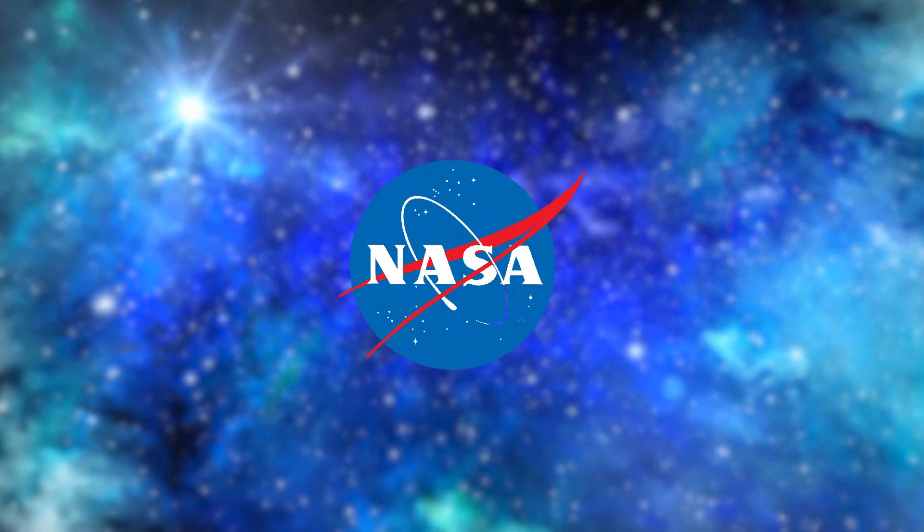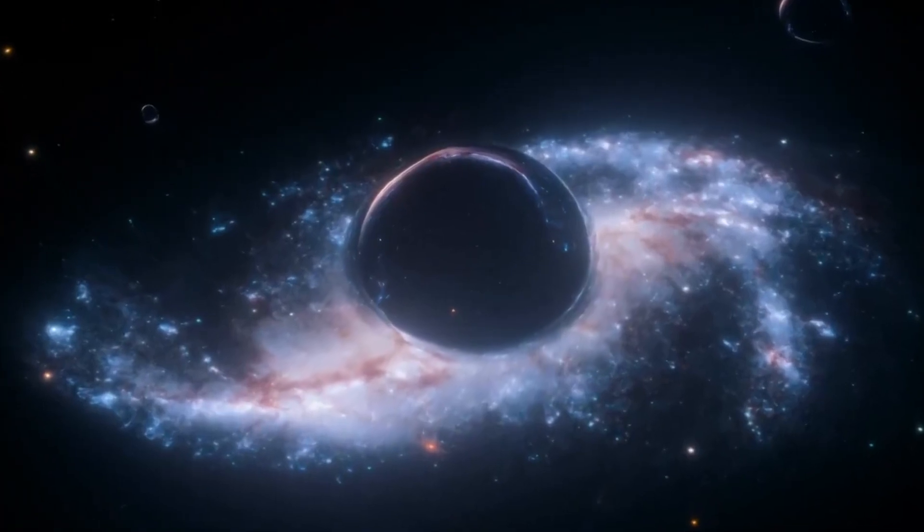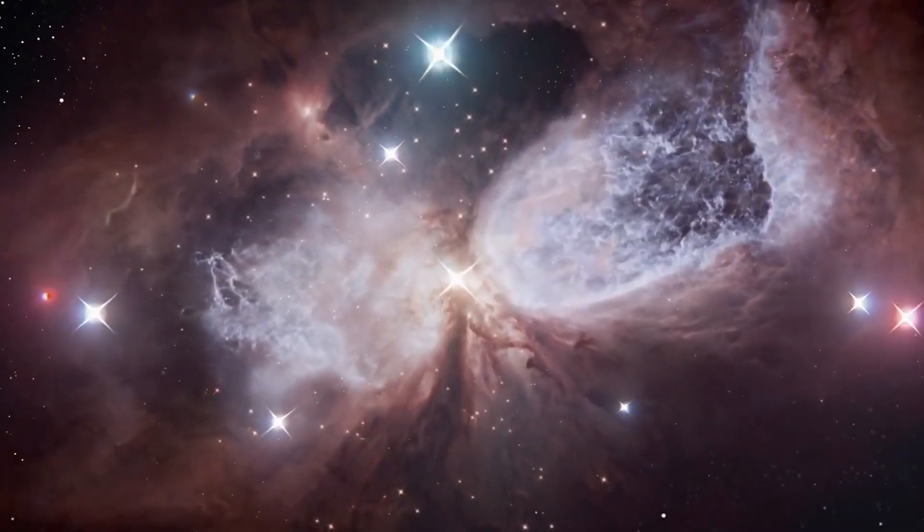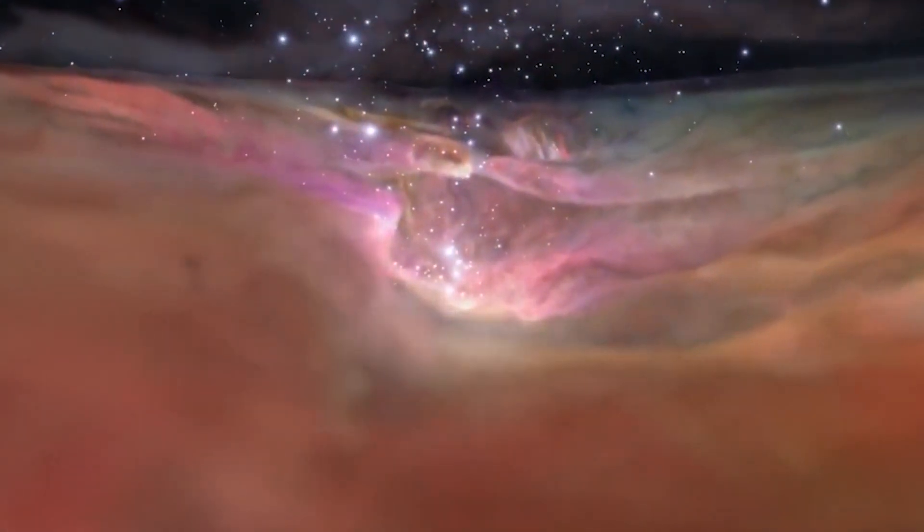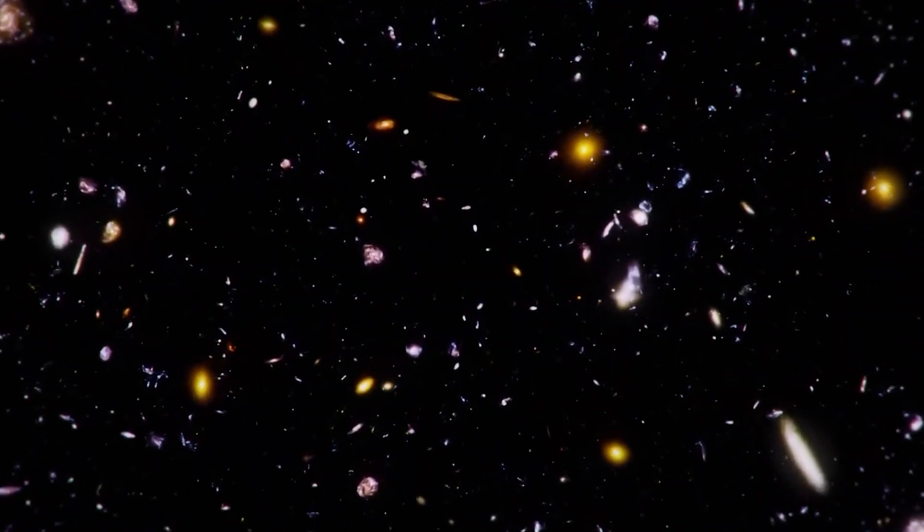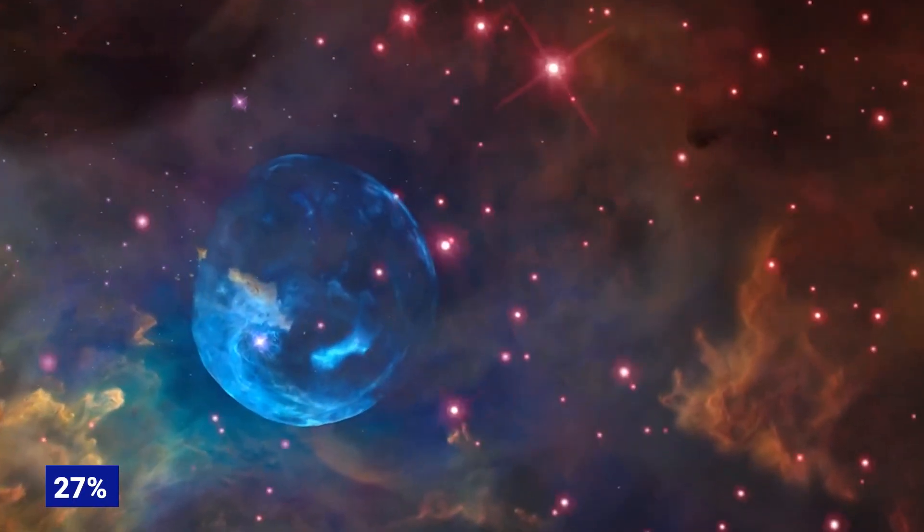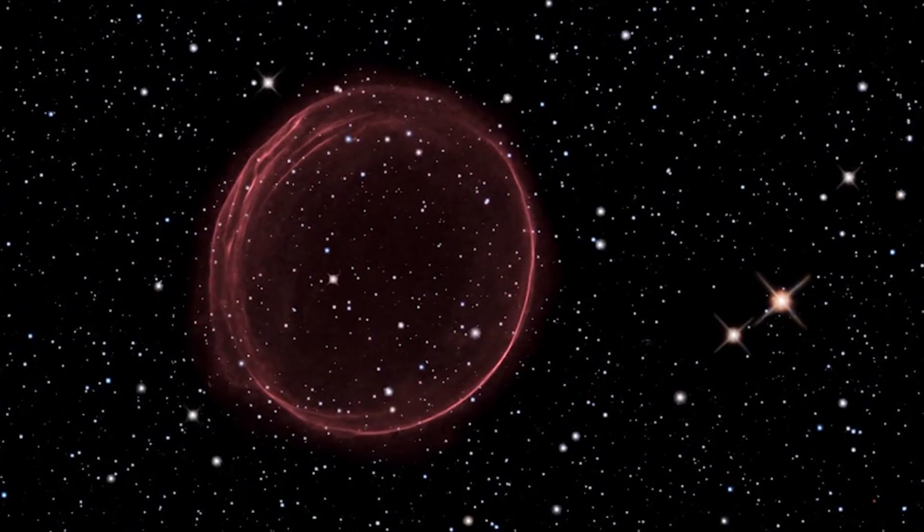According to NASA, we are much more certain what dark matter is not than what it actually is. The first thing to point out about dark matter is that it is dark. As obvious as it may seem, it basically means that it is not in the form of visible stars and planets. Observations show that there is far too little visible matter in the universe to make up the 27% required by the observations.